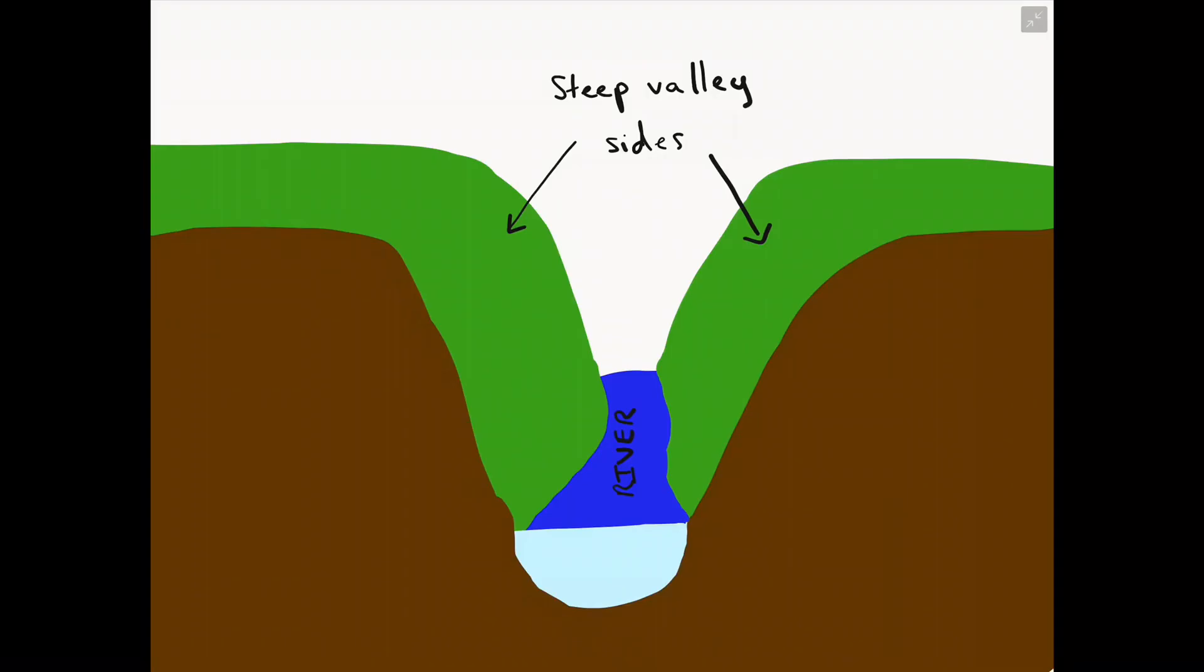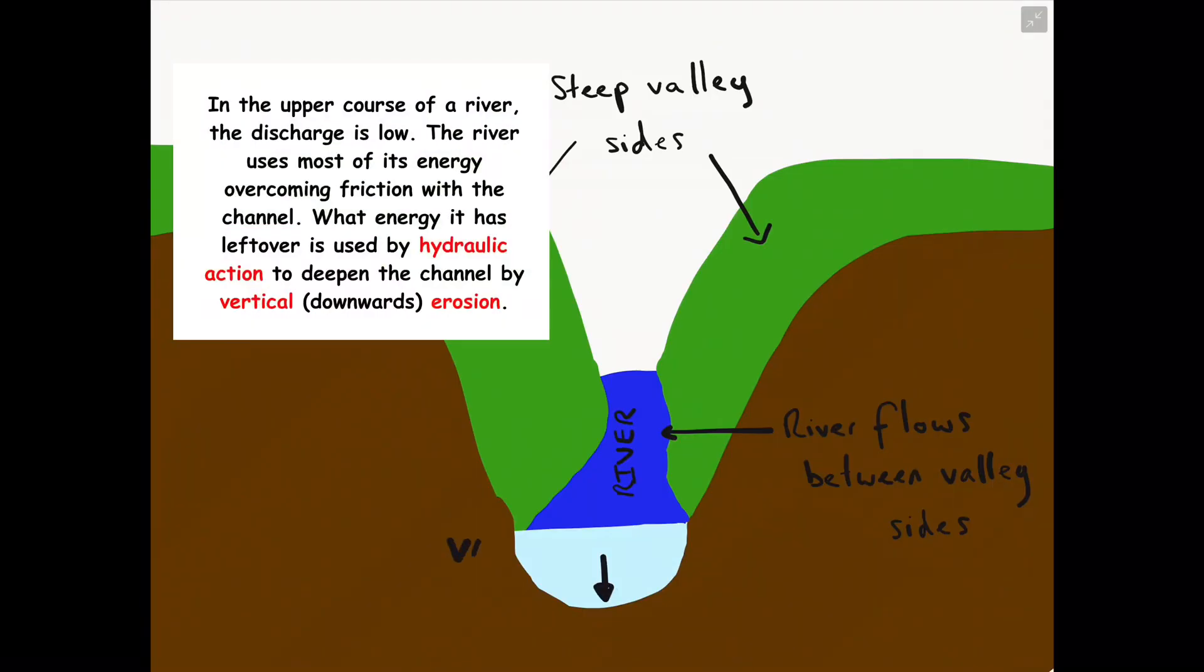The river is surrounded on both sides by steep valley sides. When it flows through the steep valley sides, the river uses most of its energy to overcome friction with anything it comes into contact with, whether it be on the riverbed or just moving through the valley. What energy it has left over is used by hydraulic action, the sheer force of the water, to deepen the channel by creating vertical downwards erosion.